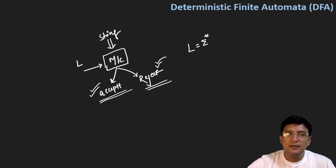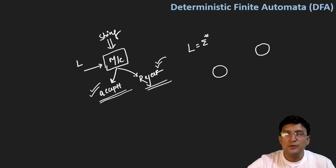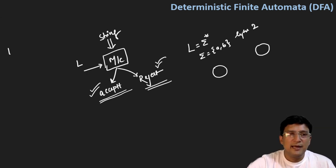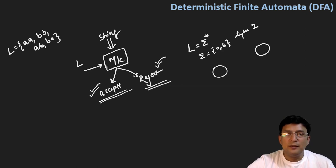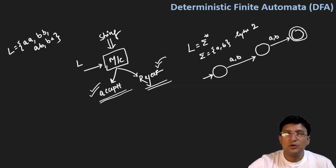As a prerequisite for finite state machines, let's build a small automata representing the set of all strings over {A, B} of length 2. The language will contain strings AA, BB, AB, and BA. This is our start state; on taking A or B we move to the next state, and after two characters we reach the stop state.